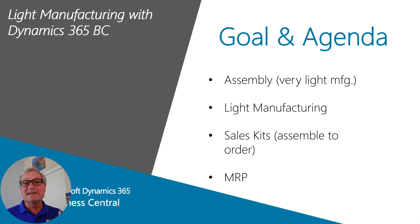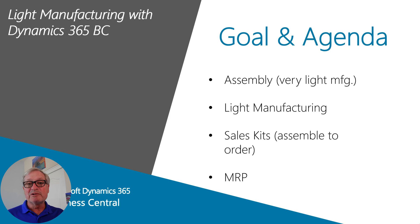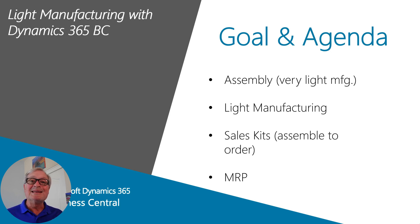We're going to look at an assembly transaction, which is a simple bill of materials. We're also going to look at an assembly transaction that's made to order on a sales order. Then we're going to look at production orders, which is a full-blown manufacturing piece, but in a simplified version. And finally, we're going to look at the MRP process for planning and execution.